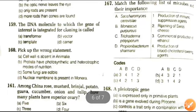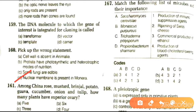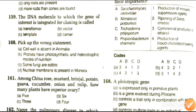Next question: pick the wrong statement. Cell wall is absent in Animalia; Protista have photosynthetic and heterotrophic modes of nutrition; some fungi are edible; nuclear membrane is present in Monera. The last option is wrong because nuclear membrane is absent in Monera.